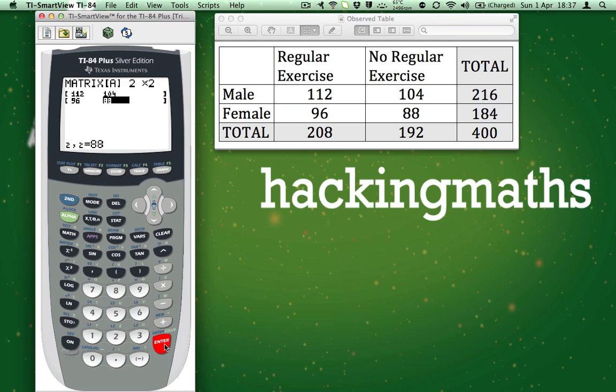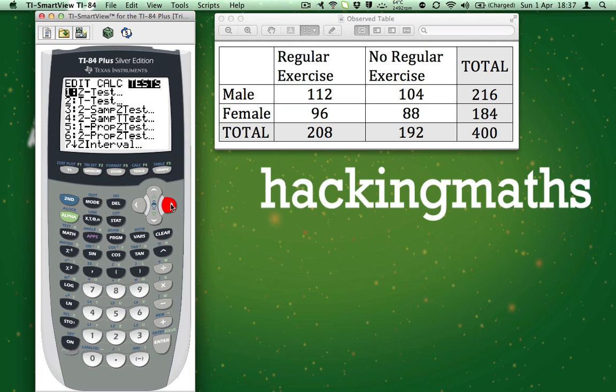Press the stat button on the calculator. Scroll all the way to the right so that Tests is highlighted. Then scroll up until you get to Chi-squared Test and make sure it is also highlighted.